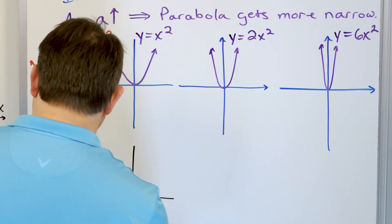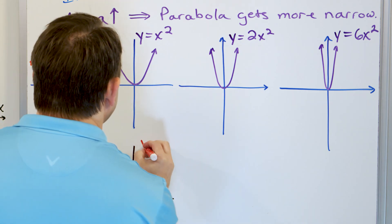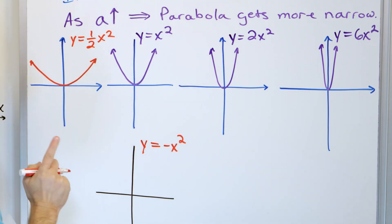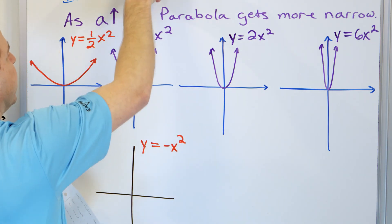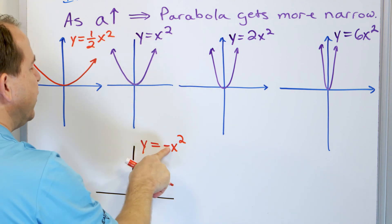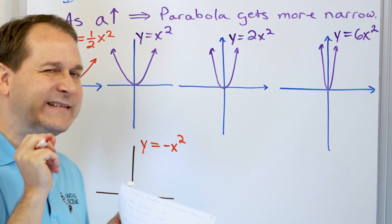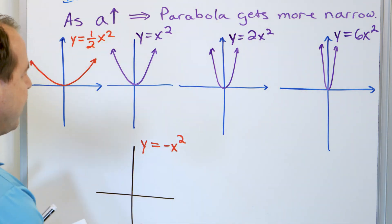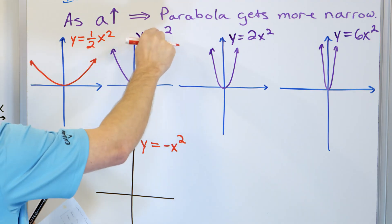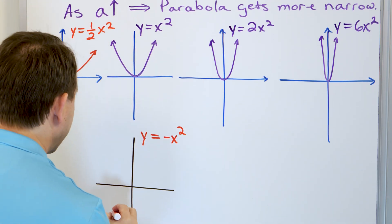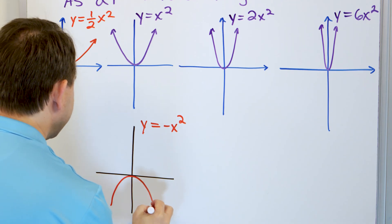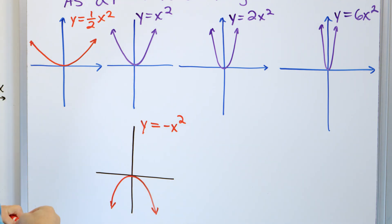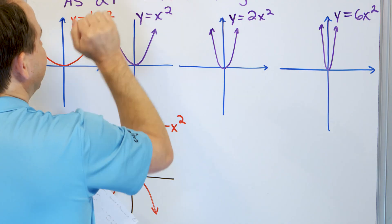Let's draw the equation y is equal to negative x squared. Here, the value in front of the x squared is a positive one in the basic case, but now it's a negative one. So it's the same absolute value — just negative instead of positive. It should have the exact same shape but open downward, going up to a maximum and then back down.